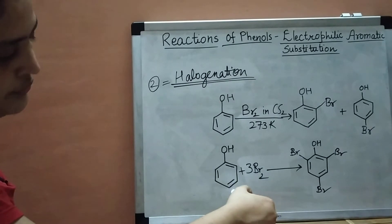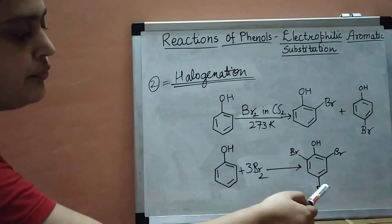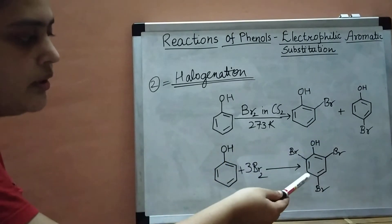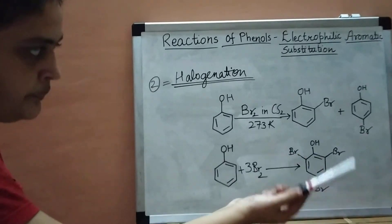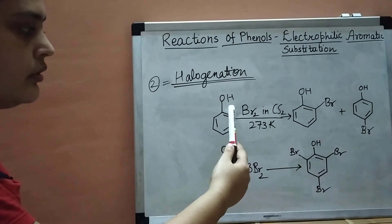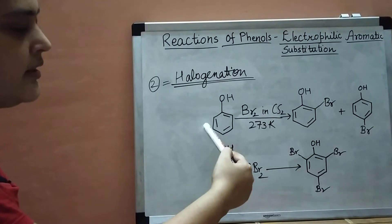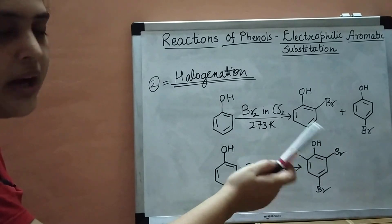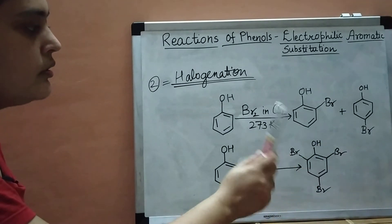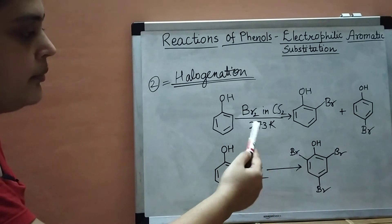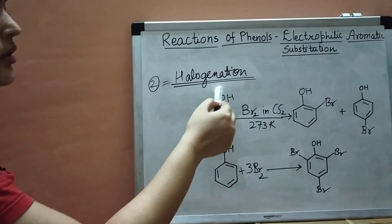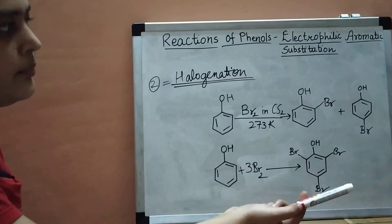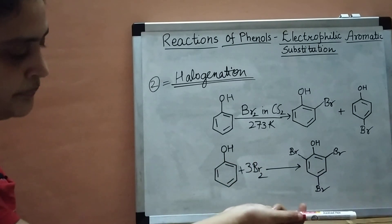The second way: if you add bromine water to phenol, you get 2,4,6-tribromophenol instead of mono-bromophenol. Notably, when halogenating benzene, you need a Lewis acid to activate the ring, but with phenol you do not need a Lewis acid because the OH (hydroxy) group is already an activating group — it activates the benzene ring towards electrophilic aromatic substitution on its own.